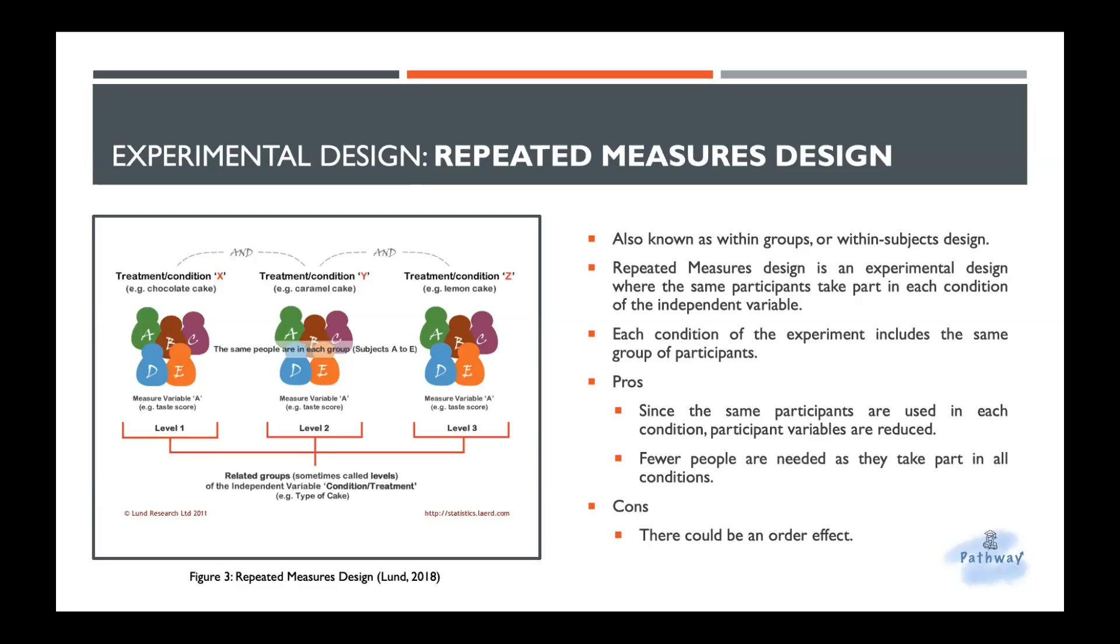Counterbalancing is used to overcome order effects in a repeated measures design where each possible order of levels in the IV is performed by a different subgroup of participants, which can be described as an A, B, B, A design as half the participants do condition A and then B, and then half do B and then A. So it's like they just swap it around randomly to avoid the order effect and the fatigue effect and also the practice effect.